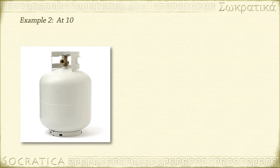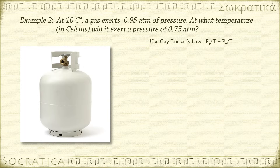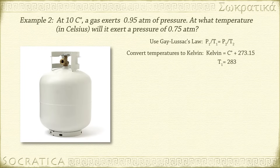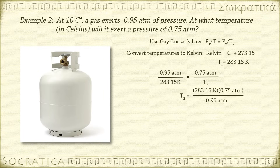Here's another example. At 10 degrees Celsius, a gas exerts 0.95 atm of pressure. At what temperature in Celsius will it exert a pressure of 0.75 atm? P1 over T1 equals P2 over T2. Remember, we have to convert temperatures to Kelvin: Kelvin equals degrees Celsius plus 273.15. So T1 equals 283.15 Kelvin. 0.95 atm divided by 283.15 Kelvin equals 0.75 atm divided by T2. Solving for T2: T2 equals 283.15 Kelvin times 0.75 atm divided by 0.95 atm, which equals 223.54 Kelvin.